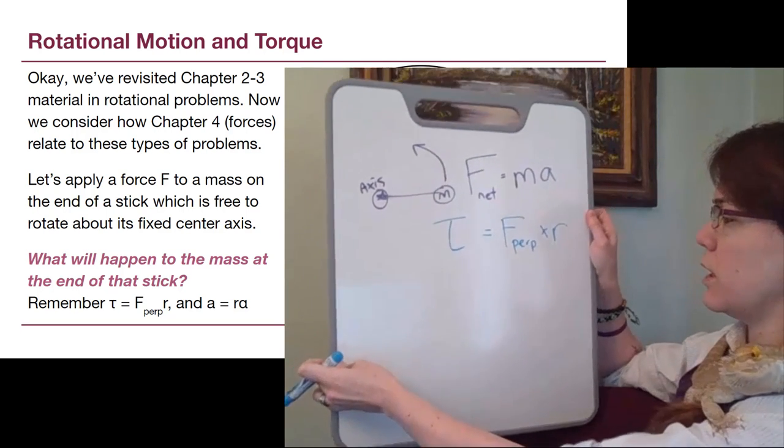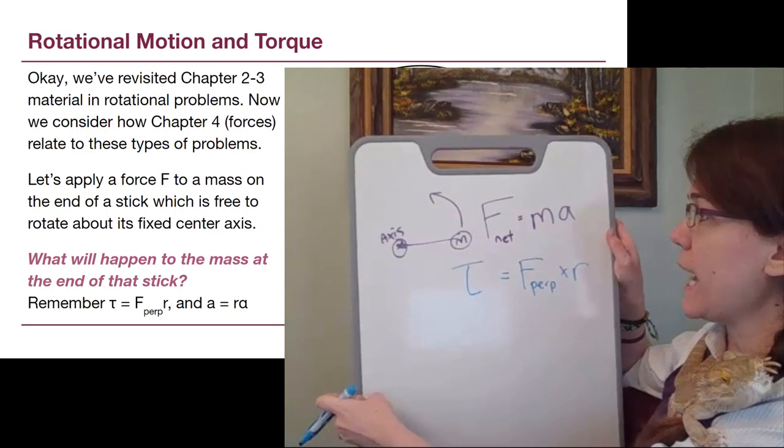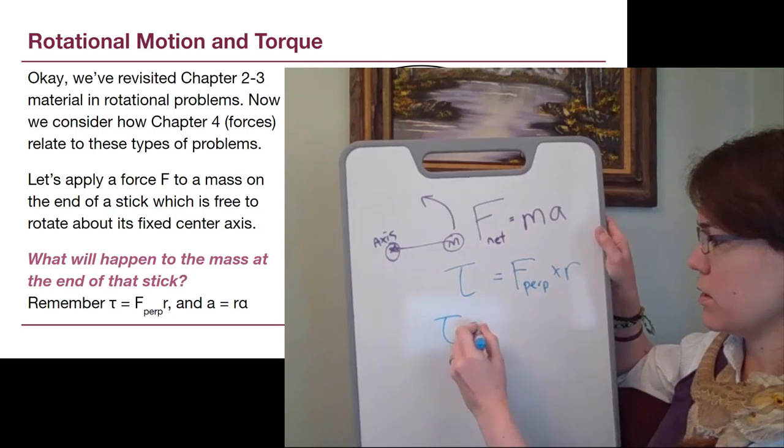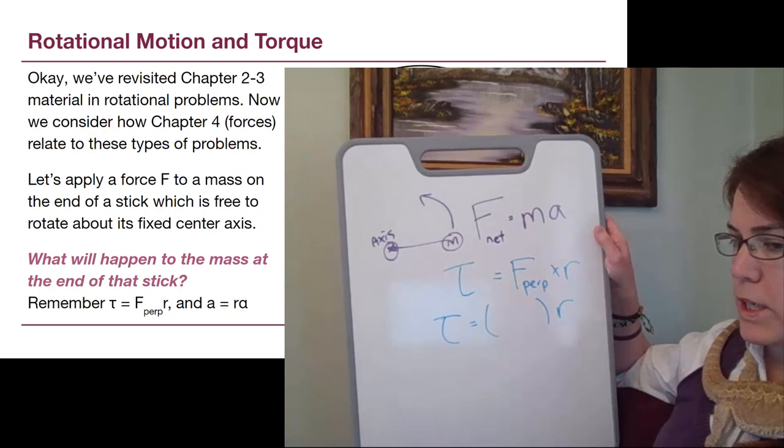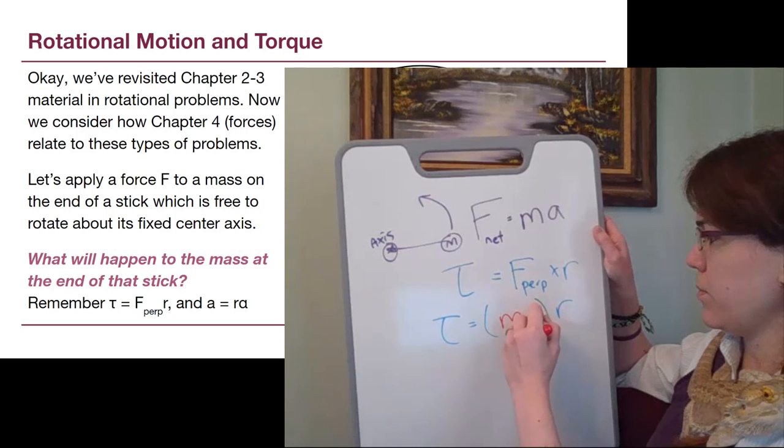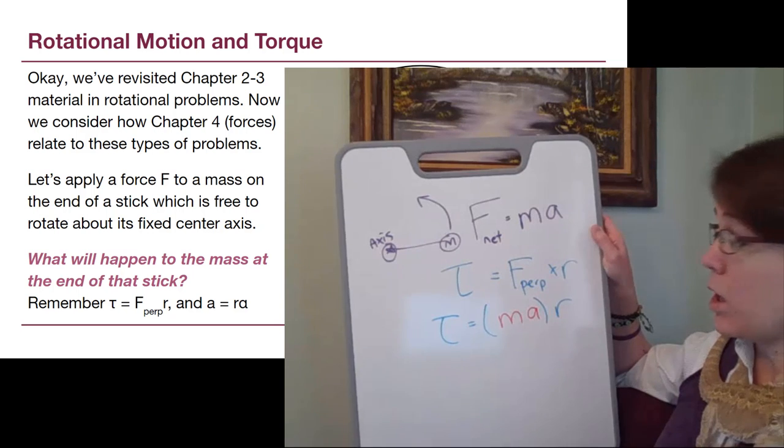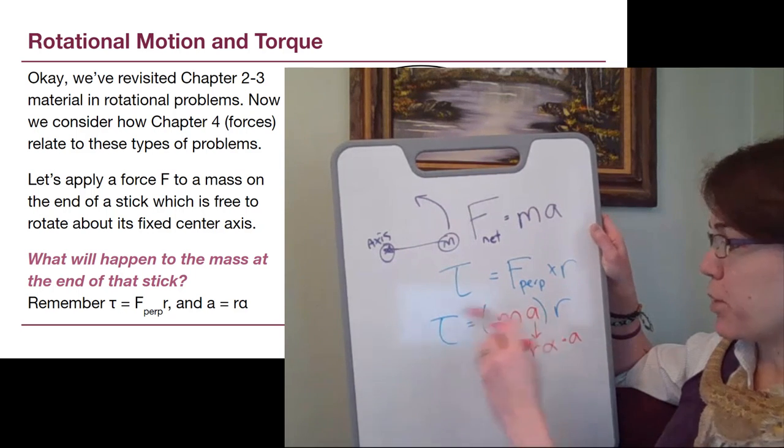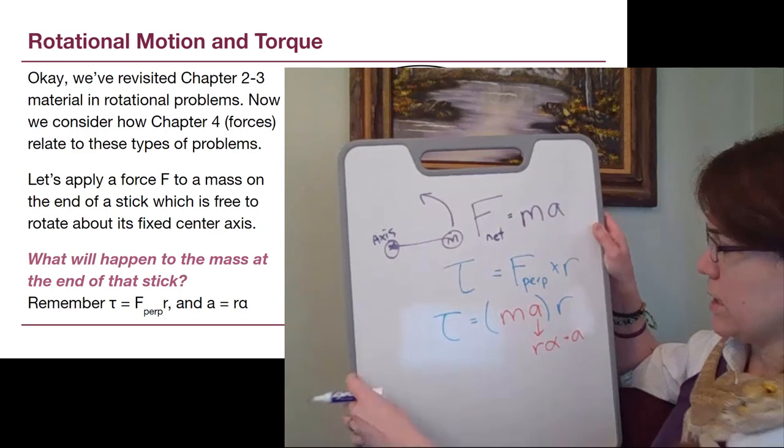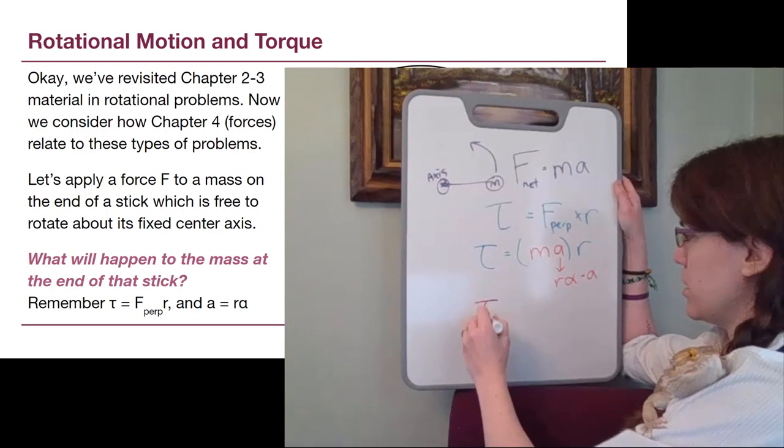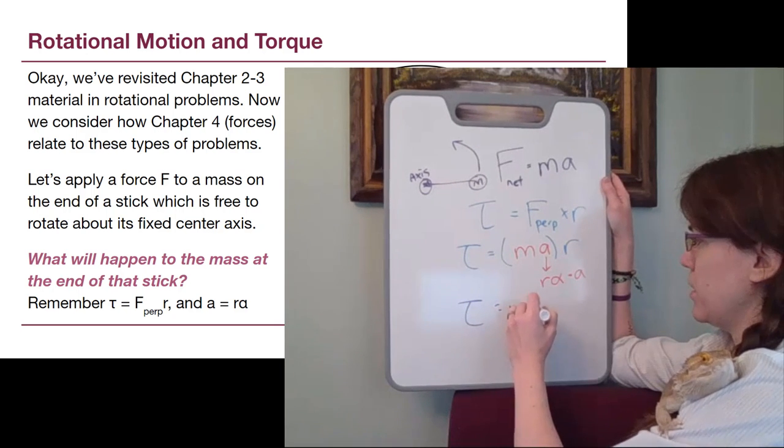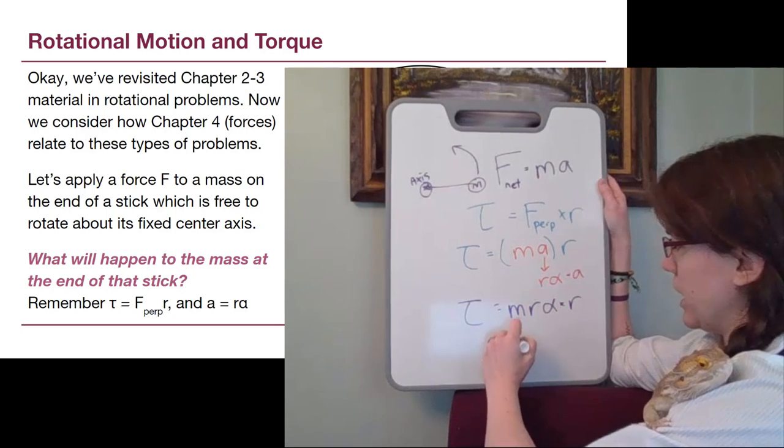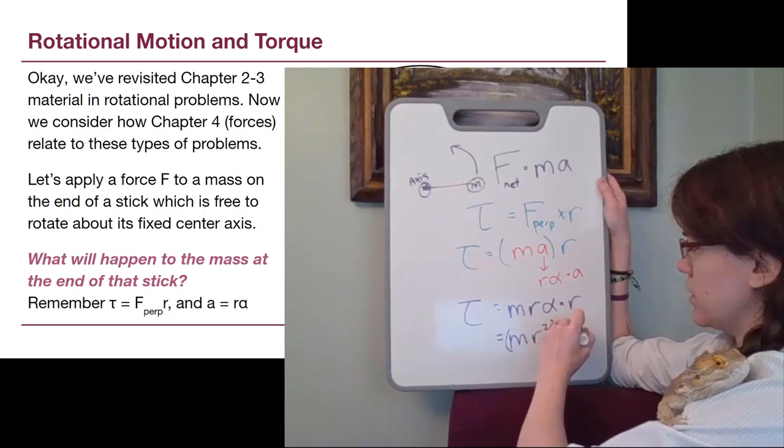We know from chapter 9 that torque is equal to the perpendicular force times the distance to the axis. So with this new system then, what we have is that this perpendicular force, we have the torque, is equal to this perpendicular force ma times the distance of the axis, but we also know that r alpha is equal to a, and so we can plug that in, and let me switch back to purple, and we get that torque is equal to m r alpha times r, so we can group those r's together, and we get m r squared times alpha.